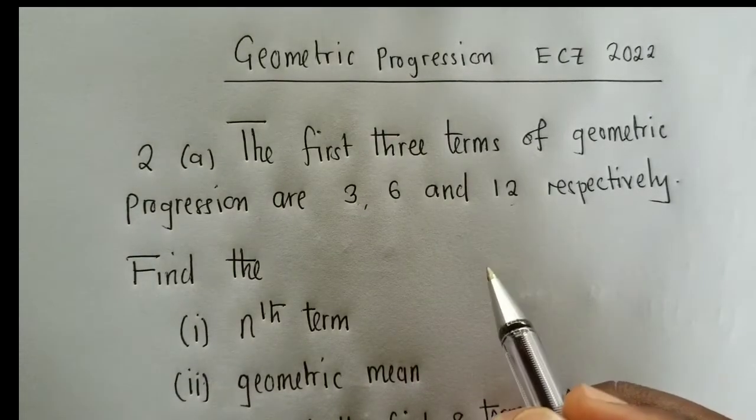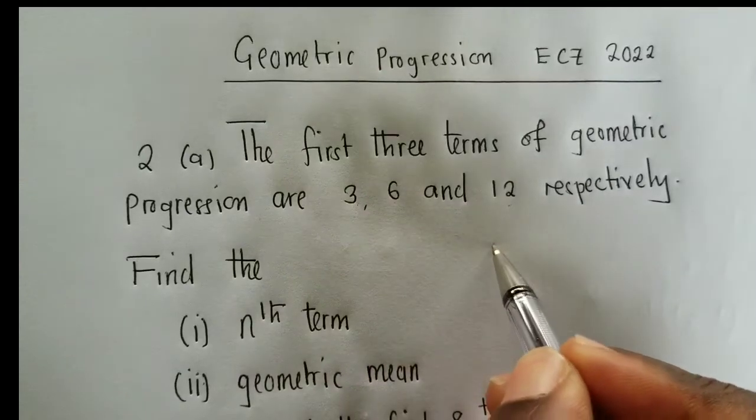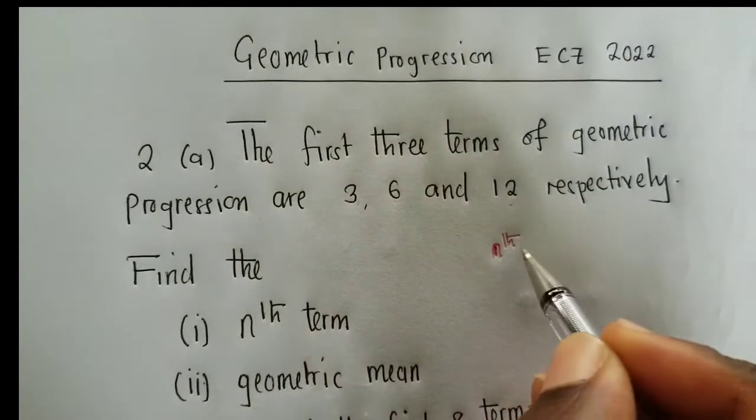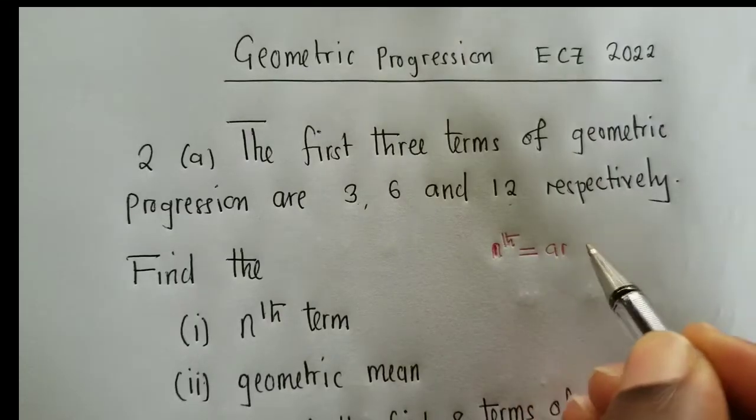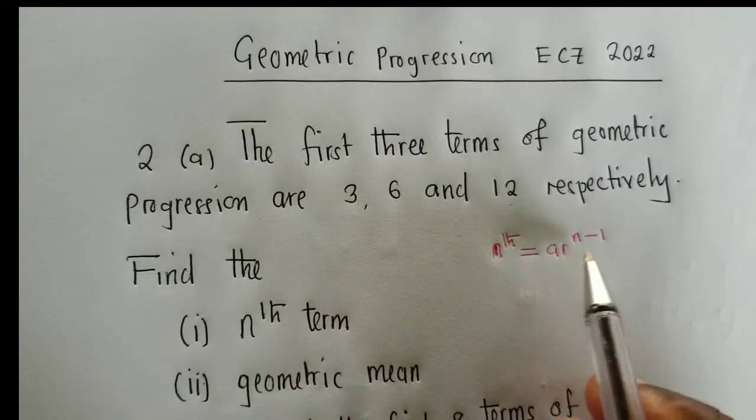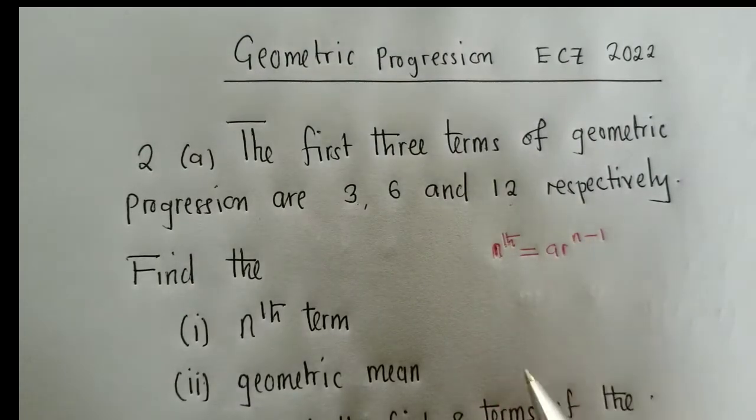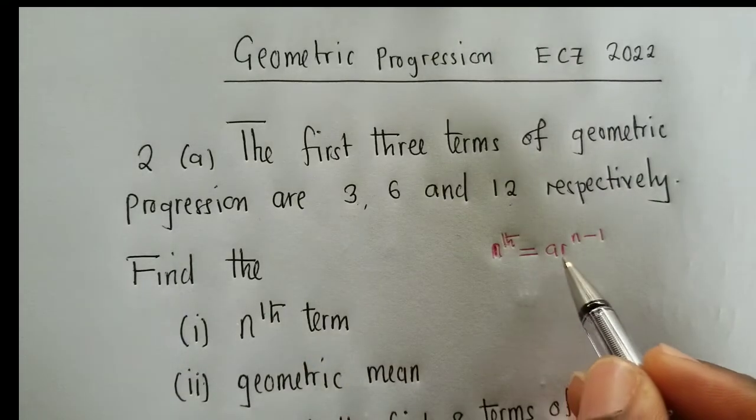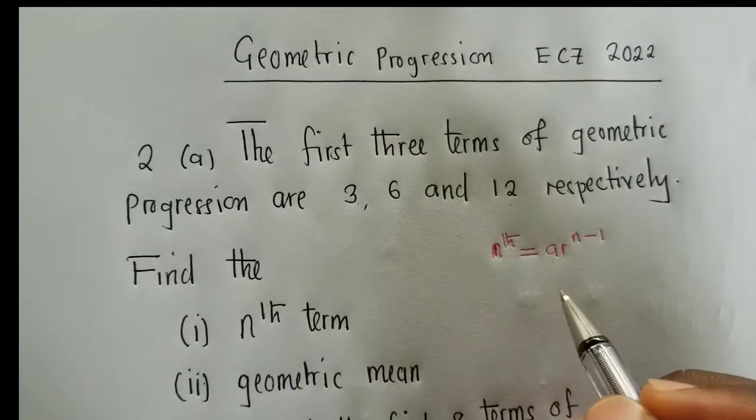So to find the nth term, we need to use the formula nth. This is a formula right here: nth equals a times r to the power of n minus 1. So the formula for finding nth term is this one. We identify our a and r, that's all. These are the two things that we need.